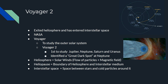Next: Voyager 2. Recently, this NASA spacecraft exited the heliosphere and entered interstellar space. Voyager is used to study the outer solar system; there are two — Voyager 1 and Voyager 2. Voyager 1 studied Jupiter and Saturn. Voyager 2 studied Jupiter, Saturn, Uranus, and Neptune — making it the first spacecraft to study all four.